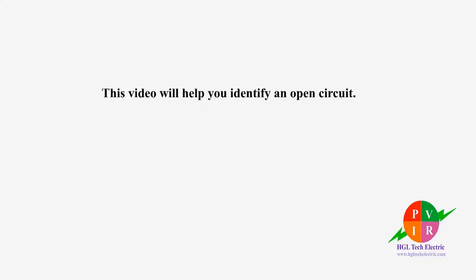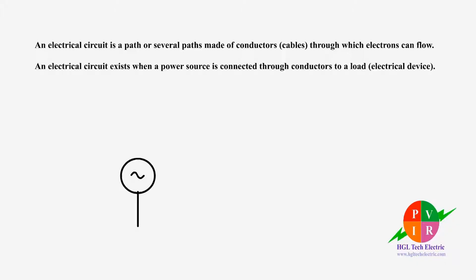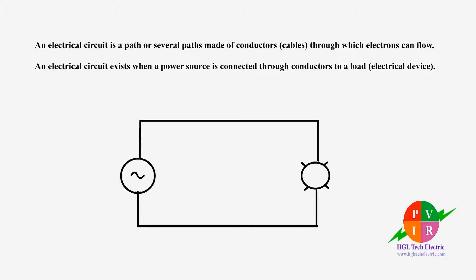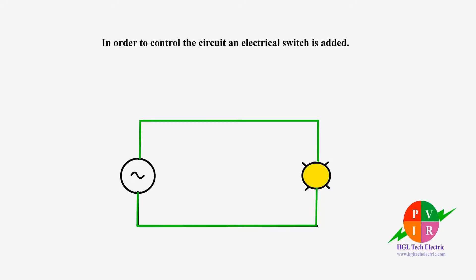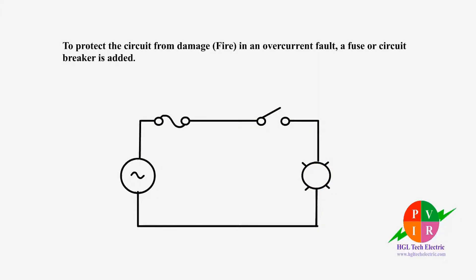An electrical circuit is a path or several paths made of conductors through which electrons can flow. To control the circuit, an electrical switch is added. To protect the circuit from damage in an over-current fault, a fuse or circuit breaker is added.